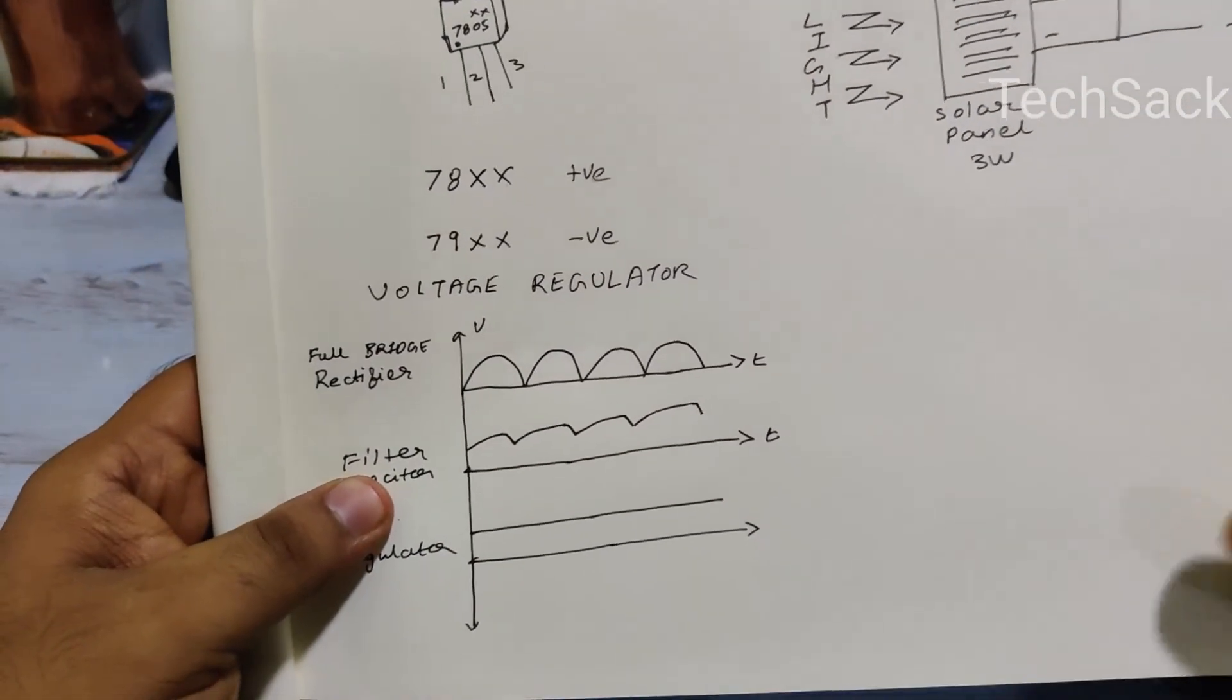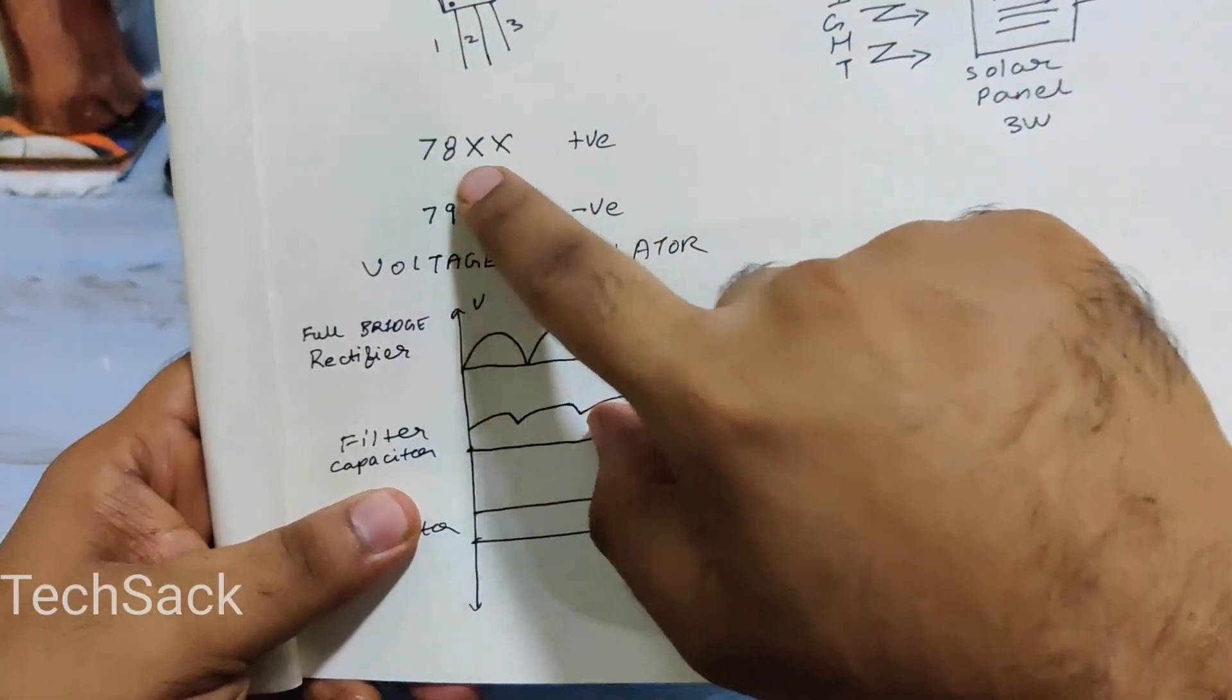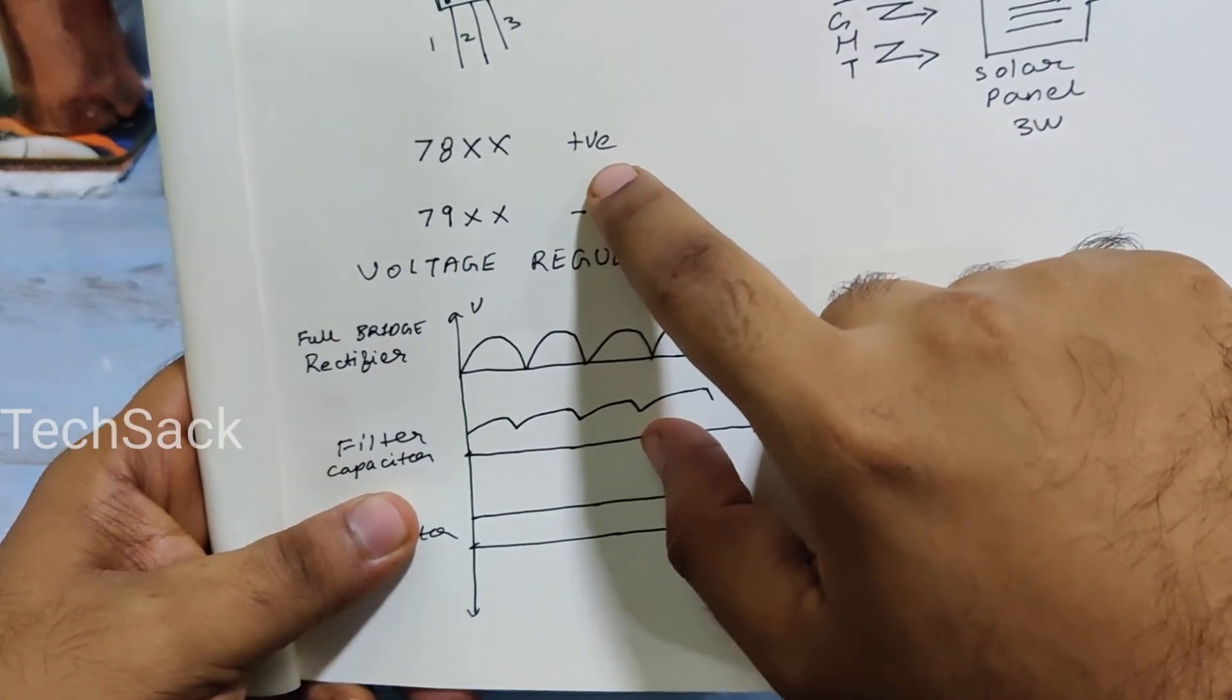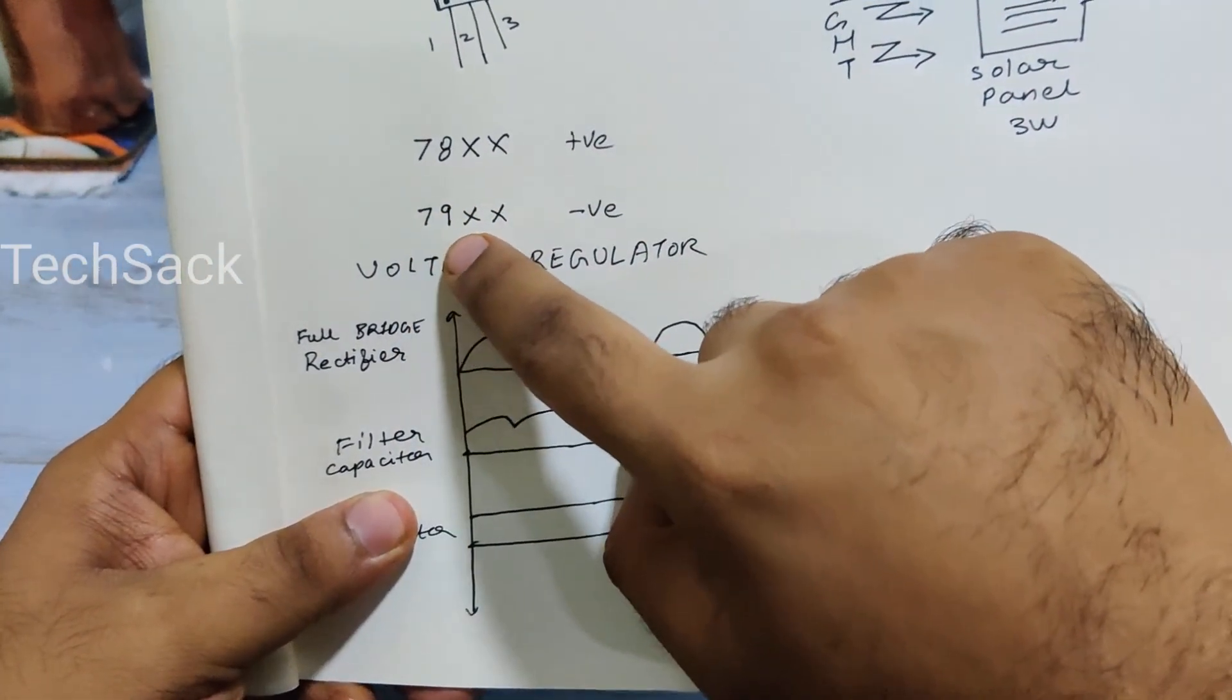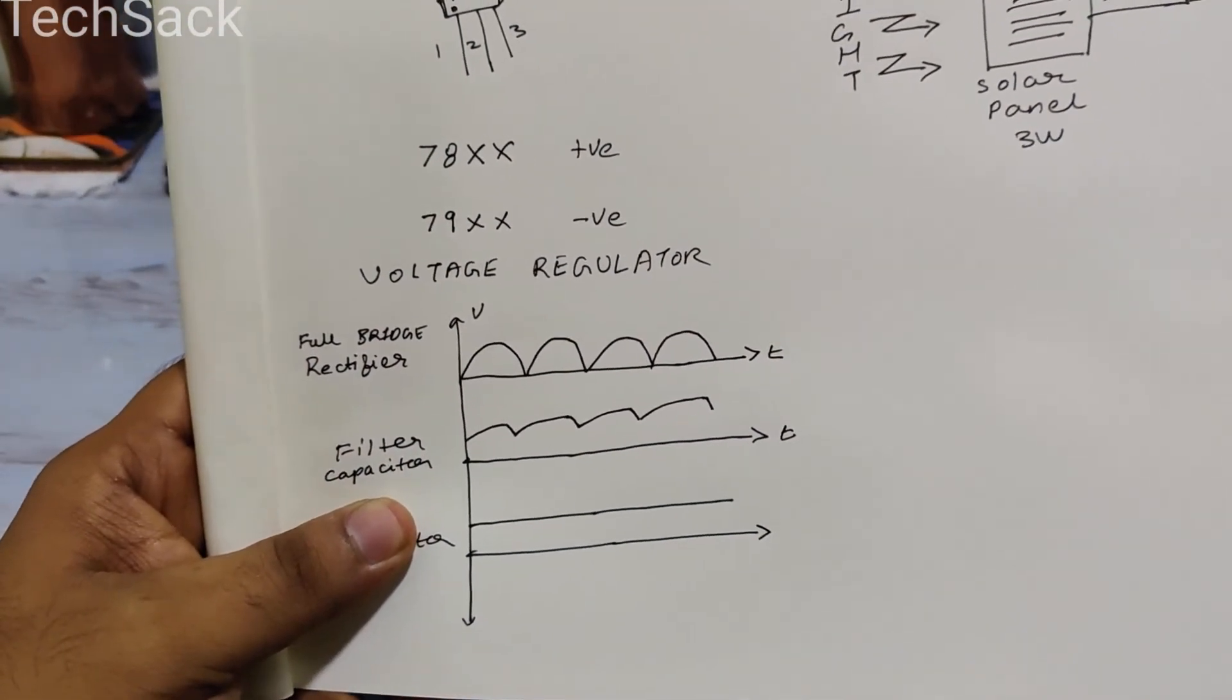There are two series of these voltage regulators. One is the 78XX series which gives us the positive regulator output and the 79 series which is a negative voltage series.